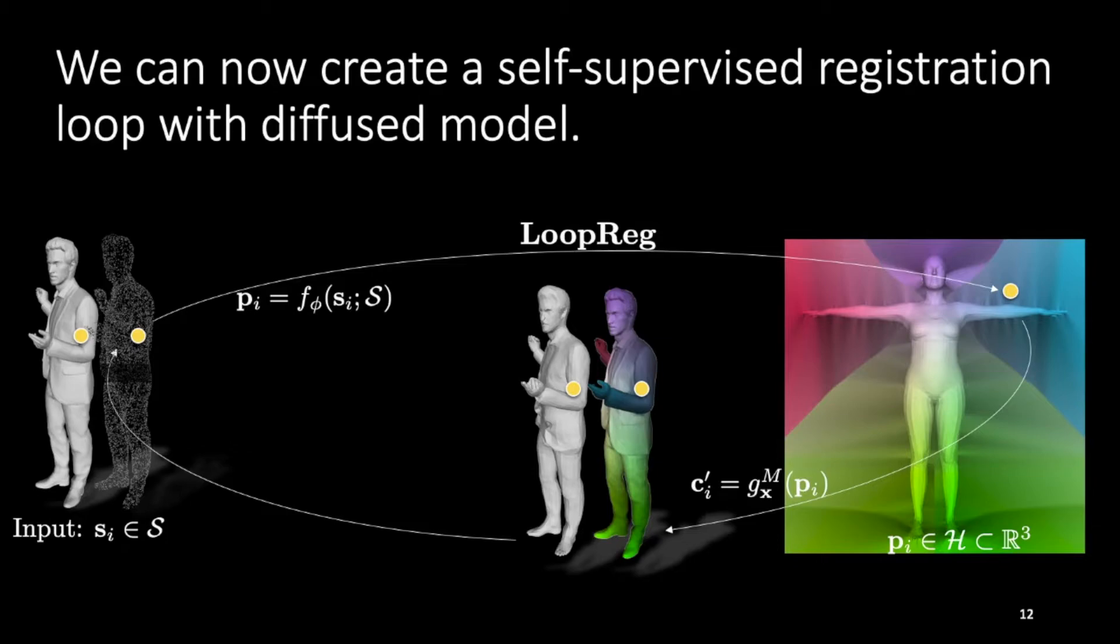We can now create a self-supervised registration loop with this diffused body model. As the network predicted correspondences that overshoot the surface are also posed and shaped according to the model parameters, this allows us to have a closed loop.